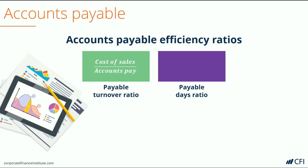For example, if the ratio is two, that means the company pays its entire accounts payable balance twice in the period.